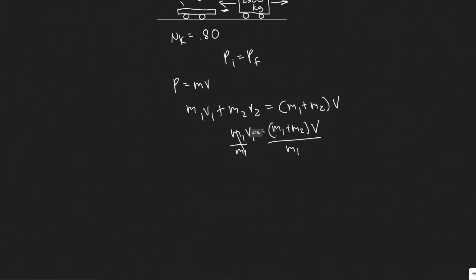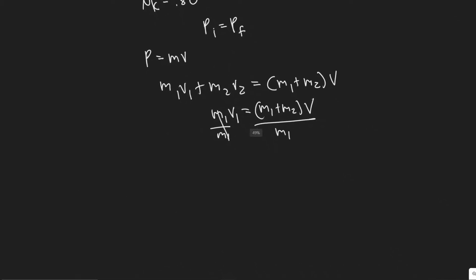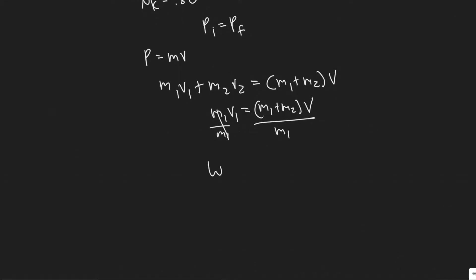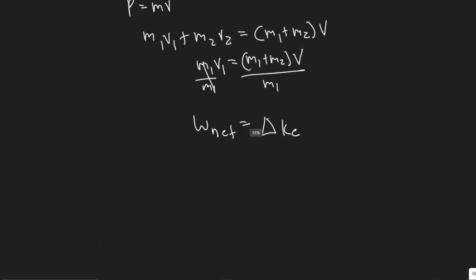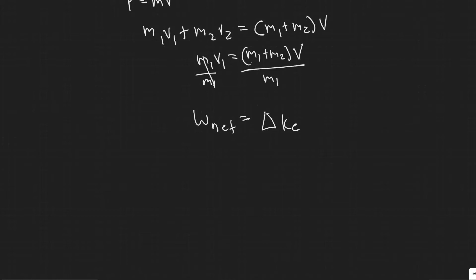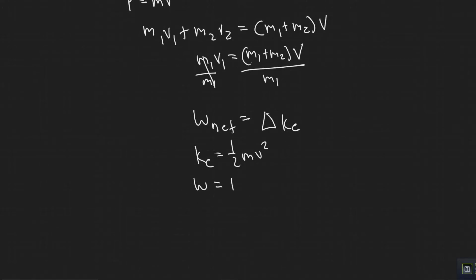The way we solve for V is by using the work-energy theorem, which tells us the net work done is equal to the change in kinetic energy. For this, you need two formulas: kinetic energy equals one half Mv squared, and work equals force times distance times cosine of theta.